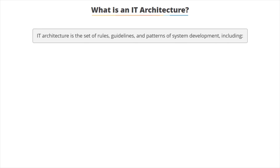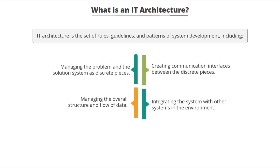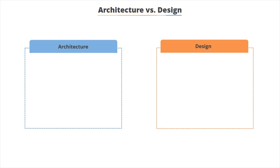So what is an IT architecture? It's rules and guidelines and patterns of system development. We've got to manage the problem as a series of discrete pieces. We need to define the communication interfaces between the pieces, think about the overall structure and how data flows, integrate the various systems and subsystems in the environment together, develop software modules on the best possible design practices and design patterns, and control the delivery of software into the system environment effectively, efficiently, and reliably.